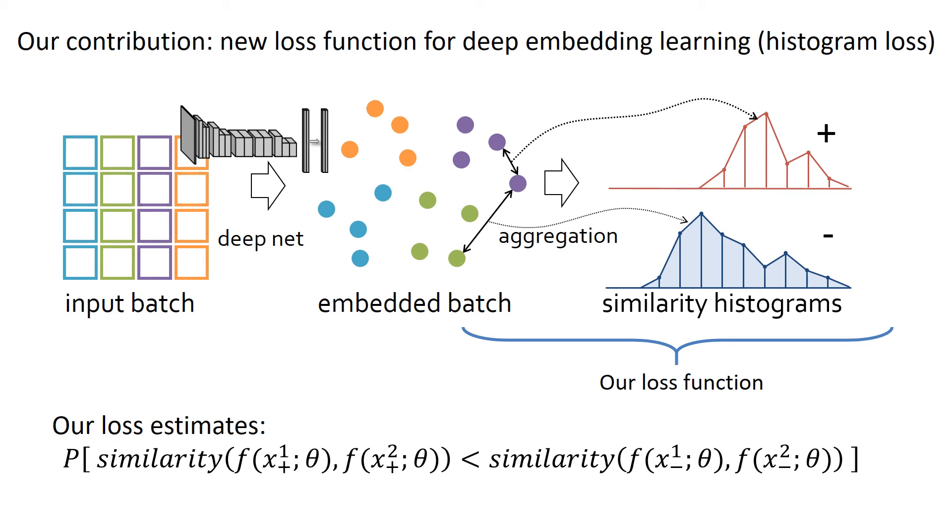To do this explicitly, one can compute the cumulative density function for the positive histogram, and then find its scalar product with the negative histogram. Note that all the computations are piecewise differentiable, and therefore computing the partial derivatives of our loss with respect to the input descriptors is relatively straightforward.